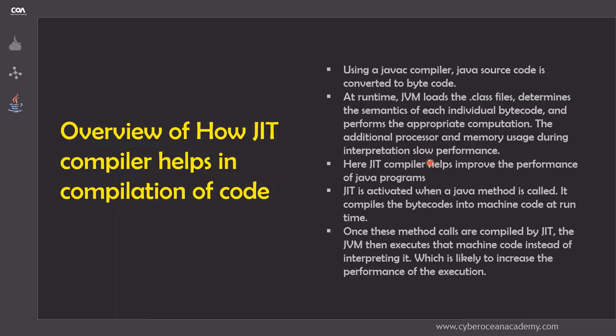This is where JIT comes into the picture. JIT compiler helps improve the performance of a Java program. When a Java method is called, JIT is activated and it compiles the bytecode of that entire Java method into machine code at runtime. Once the method calls are compiled by JIT, the JVM then executes that machine code instead of interpreting it, which is likely to increase the performance of the execution.